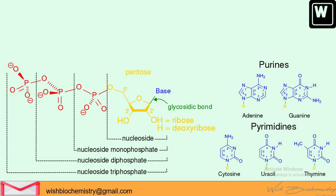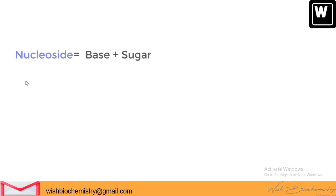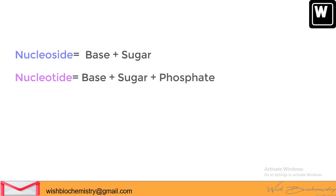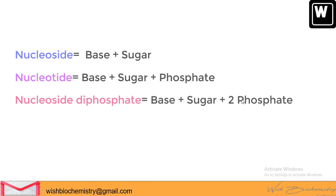Now we know about the individual groups in the nucleotide: sugar, base, and phosphate. Next, we'll learn how these bind to each other. When the base combines with sugar, a nucleoside is formed. A nucleotide has all 3 groups: sugar, base, and phosphate. Addition of 1 phosphate gives nucleoside monophosphate, 2 phosphates gives nucleoside diphosphate, and 3 phosphates gives nucleoside triphosphate.